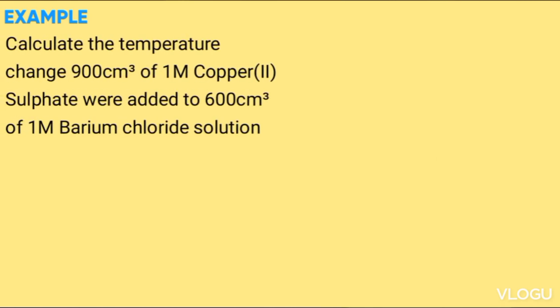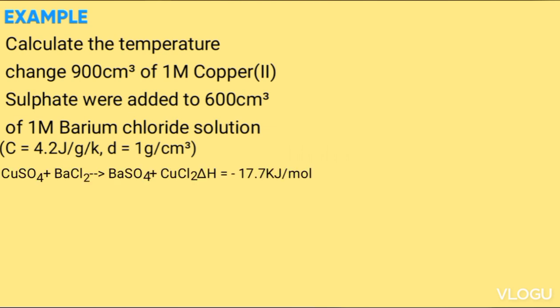Example: Calculate the temperature change when 900 cm³ of 1 molar copper sulfate solution were added to 600 cm³ of 1 molar barium fluoride solution. C = 4.2 J/g/K, density = 1 g/cm³. Use the equation given to find the change in temperature.